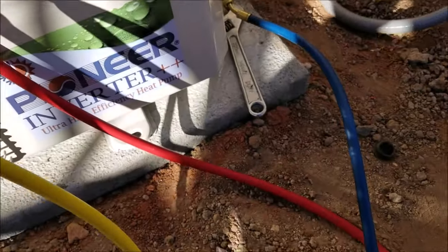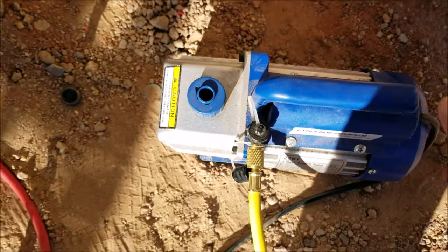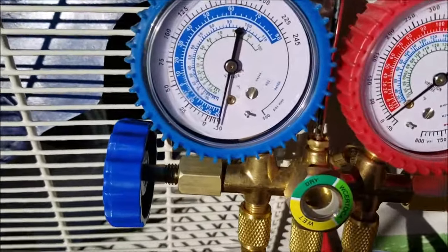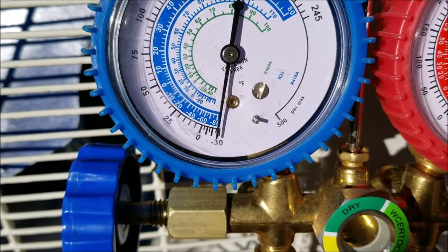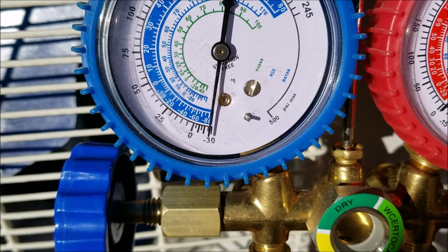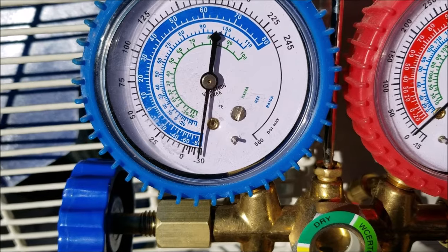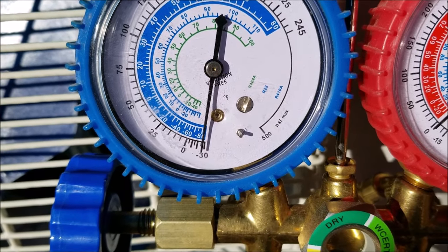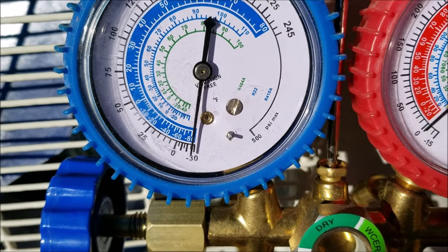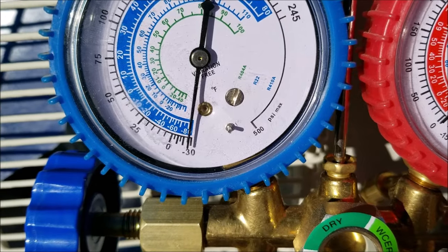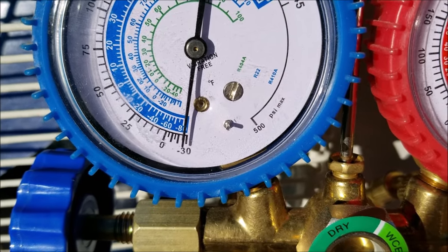So turn your blue valve off. I'm going to go and turn this off. Now I'm just going to let it sit for another good 20 minutes and make sure it holds this negative pressure. You can let this sit longer. I mean, you could even let it sit overnight or something. If it starts to lose its pressure, then we know we got a leak. So I'll be right back.